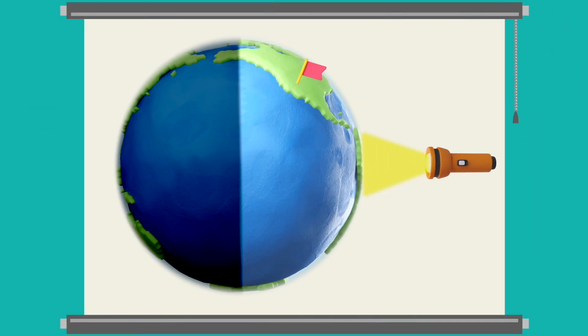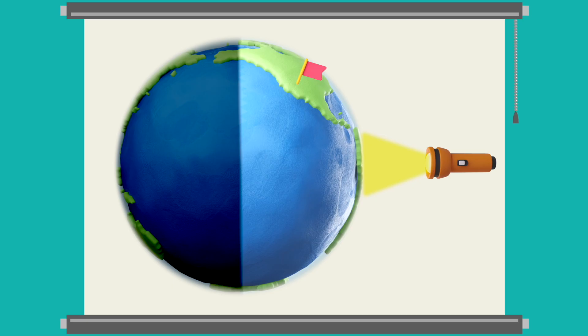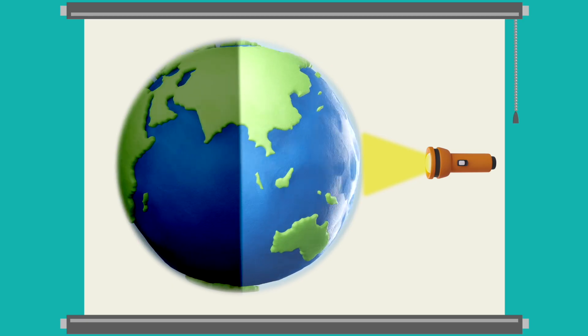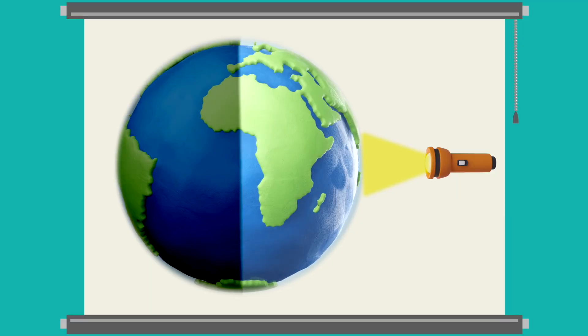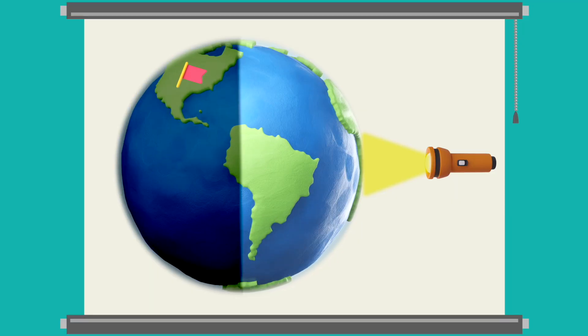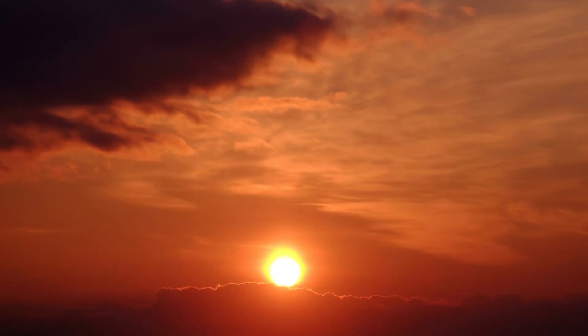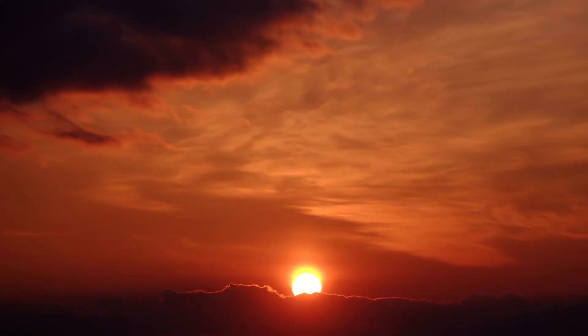Now, watch what happens as the earth turns. See how our flag is moving away from the sun toward the shadow side? What could be happening in the sky right now? This is when the sun appears to go down. When we move into the sun's shadow, the sun is setting and the day turns to night.